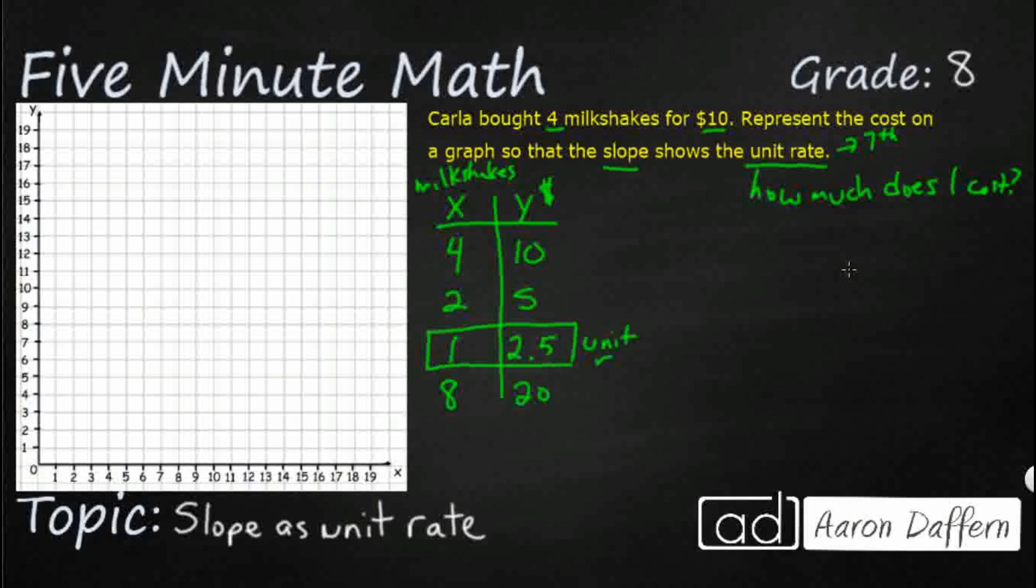Let's graph this first, and then we'll see if we can connect that to the slope. X is going to be my milkshakes, and that is going to be my dollars. So four for 10, I've got four milkshakes for $10, that's going to be one point here. I've got two for five. Pretty steep slope here. I've got my one for 2.5, I think that's my unit rate.